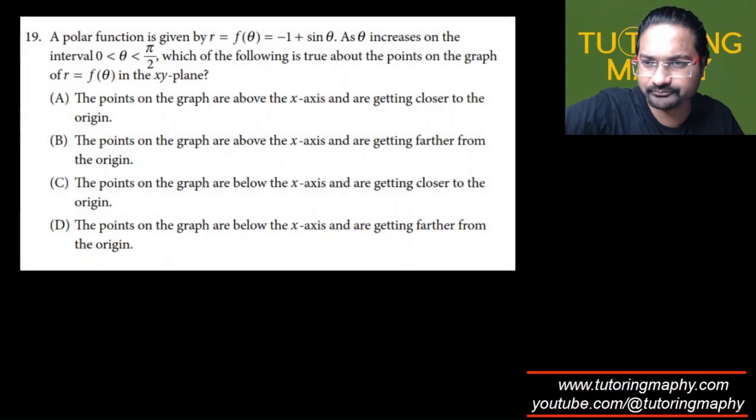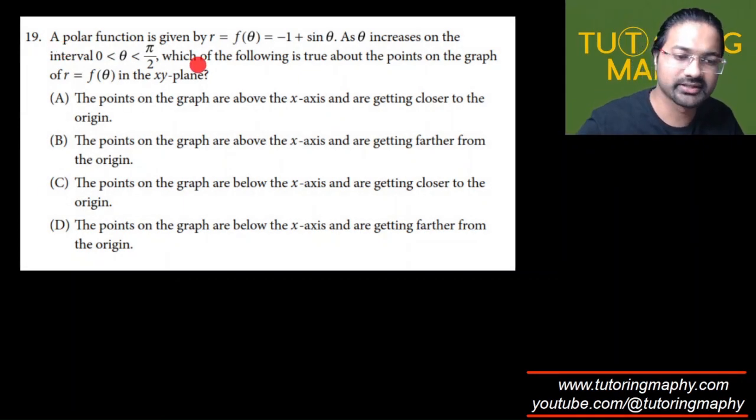The next one. This one says that a polar function is given by r equals negative one plus sine theta. And as theta increases from zero to pi over two, which of the following is true about the points on the graph of r?